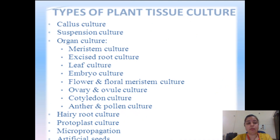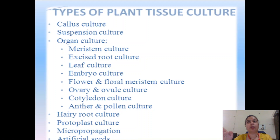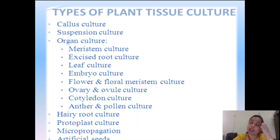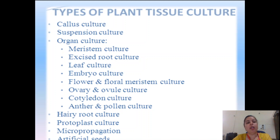In the types of plant tissue culture: callus culture — every tissue culture experiences the first step as the formation of callus, an undifferentiated or unorganized cell mass. Suspension culture is where individual cells or even protoplasts are taken and suspended in liquid culture medium.